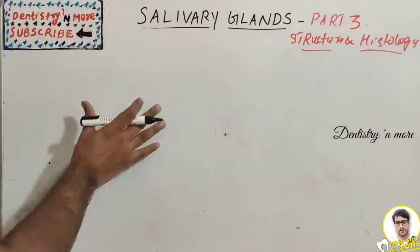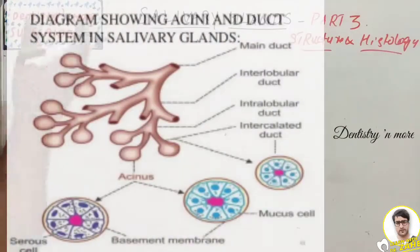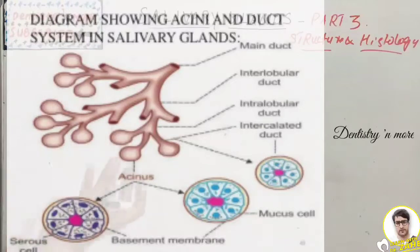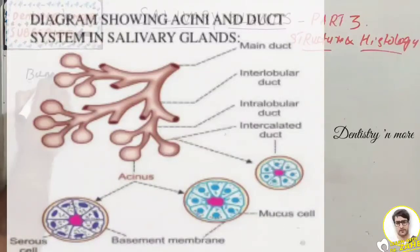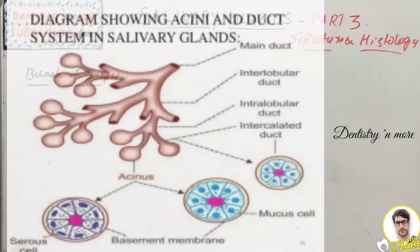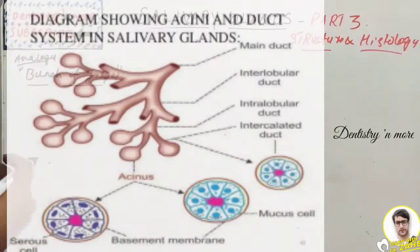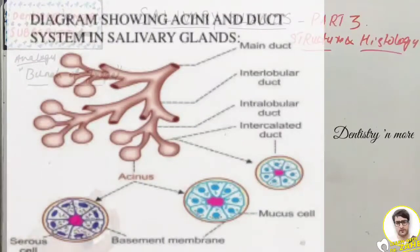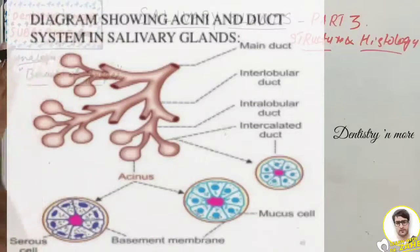The salivary gland consists of a series of branched ducts terminating in spherical or tubular secretory end pieces, or acinae. The analogy is a bunch of grapes — the stems are the ducts, and the grapes at the end pieces are the secretory end pieces. The main secretory duct empties into the oral cavity.